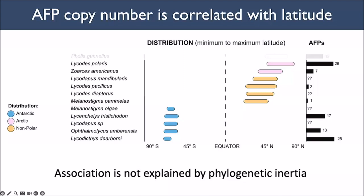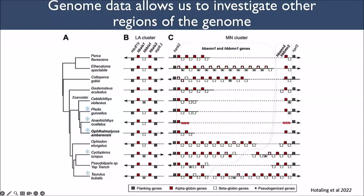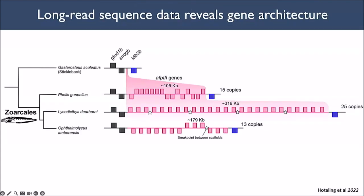For some species we have long-read genome data, which allows us to investigate other regions of the genome. Looking at hemoglobin clusters, we can see a reduction in hemoglobin copy number in our Arctic and Antarctic species. This has been shown before in notothenioids — another Antarctic clade that actually has some lineages with complete loss of hemoglobin and white blood. We don't see the complete loss here, but we do see a significant reduction in copy number.